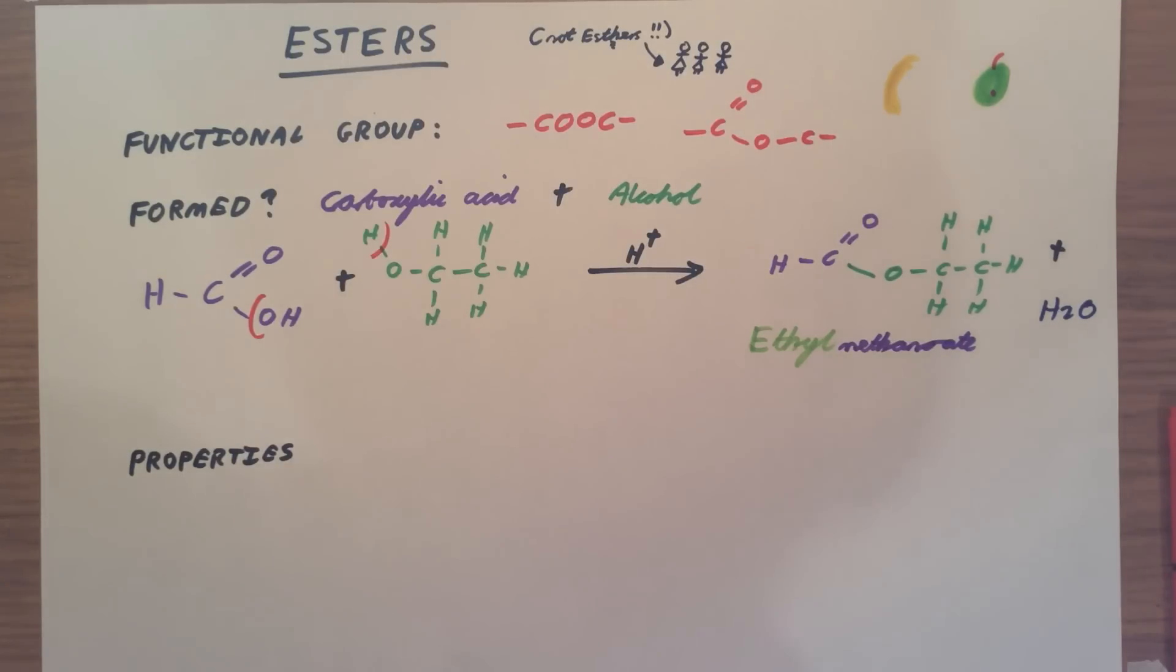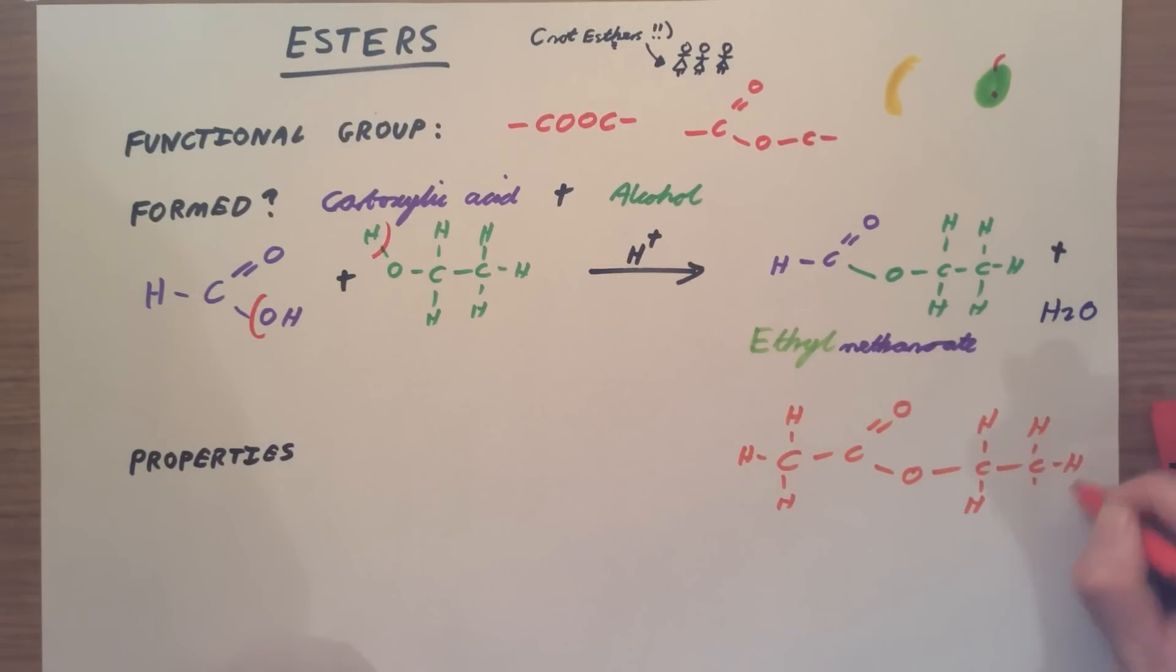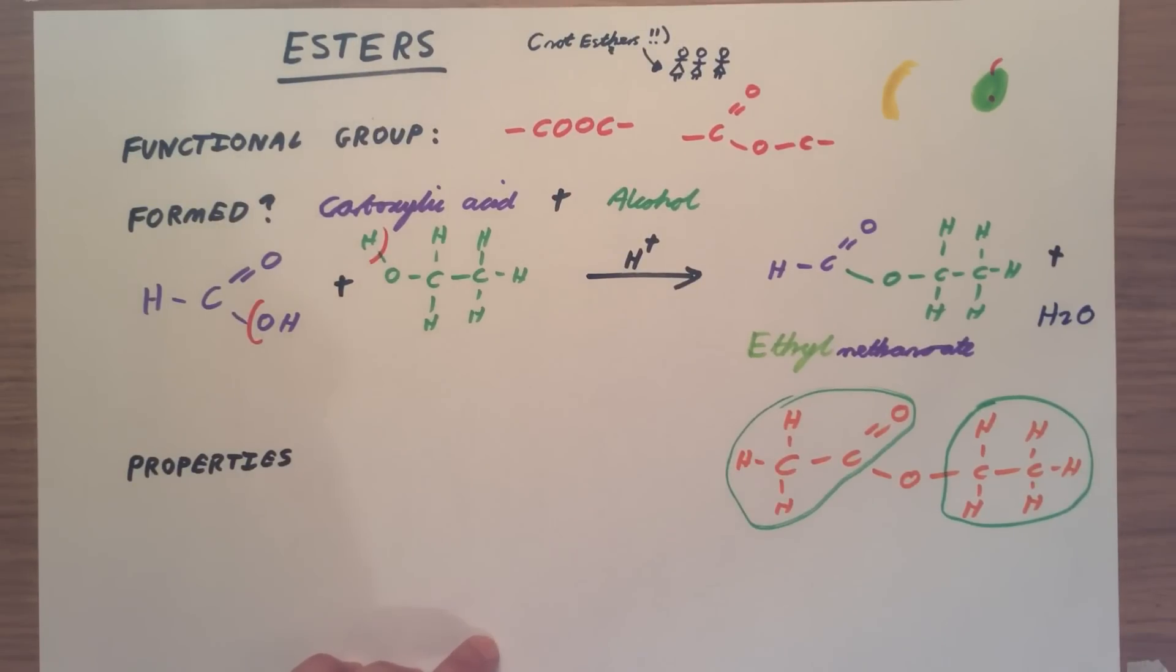The ester that you need to actually be able to recognize and name, that comes up most often, is actually this one. If we think about this, nice and straightforward to name, we have the section coming from our alcohol here, we've got the section coming from our carboxylic acid here. So this ester is actually called ethyl ethanoate. And that's the one that you need to be able to name, but I think the rules are quite useful to know anyway.